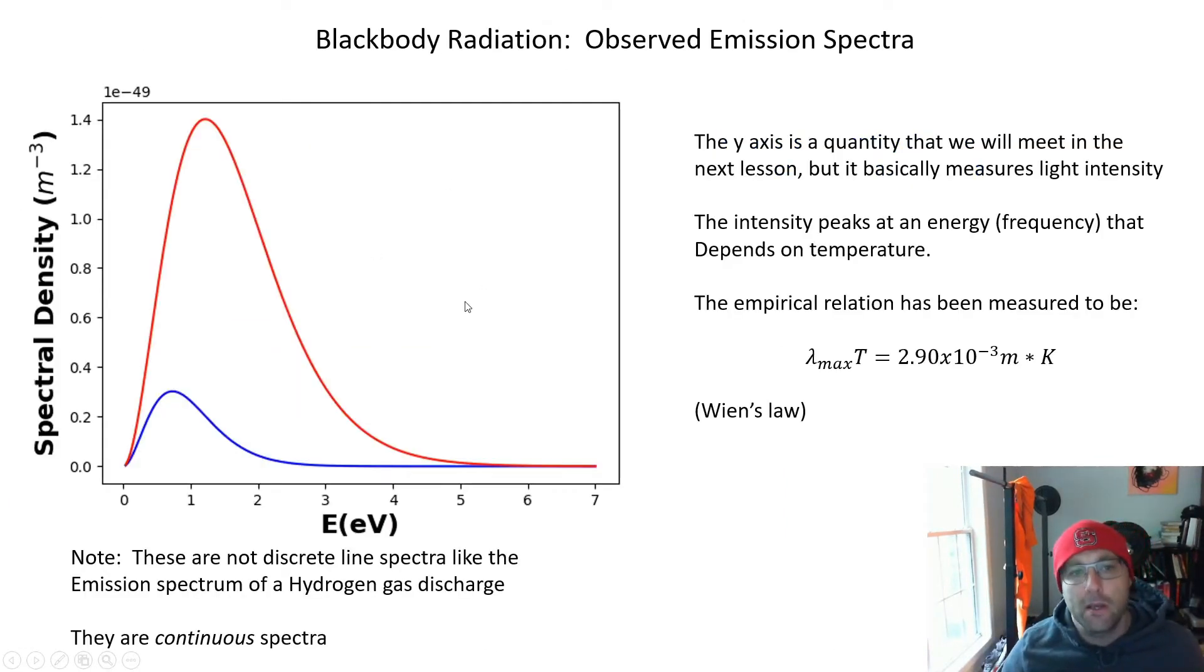And so if you do the experiment it actually looks like this, you have the sort of asymmetric peak function. So spectral density is roughly speaking light intensity, it's sort of like energy per unit energy interval per unit volume, it's a weird unit, but think of it as light intensity. And then the basic idea is that the peak in the light intensity shifts to higher and higher energy as you go to higher and higher temperature.